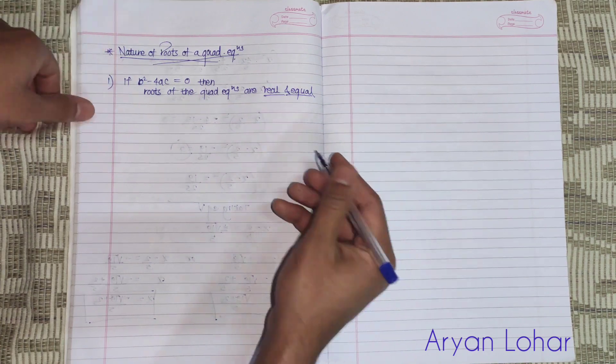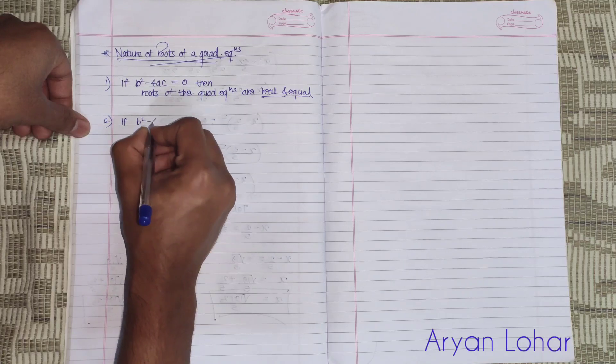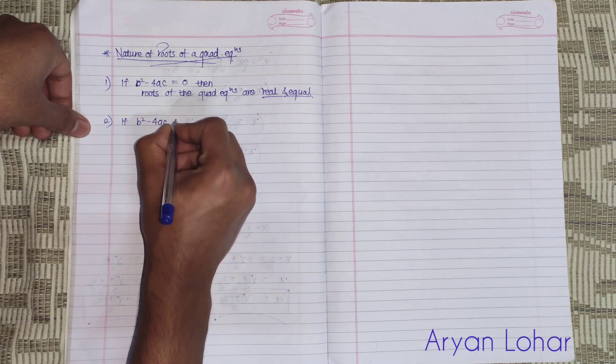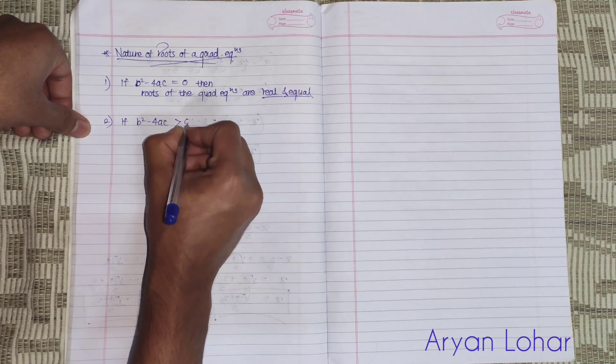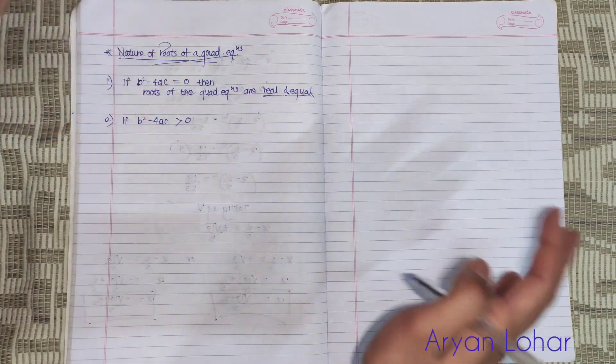Next, if b square minus 4AC is greater than 0 - means greater than 0: 1, 2, 3, 4, and many others...